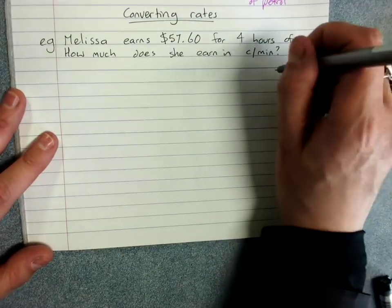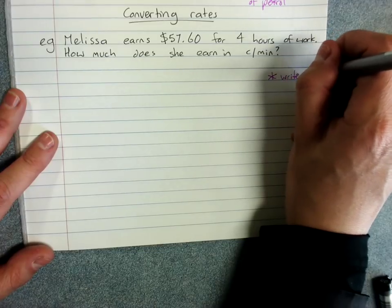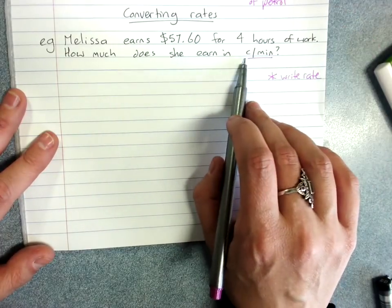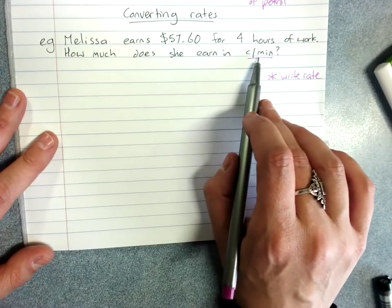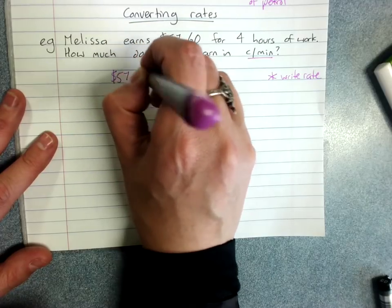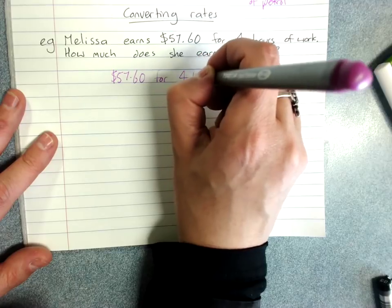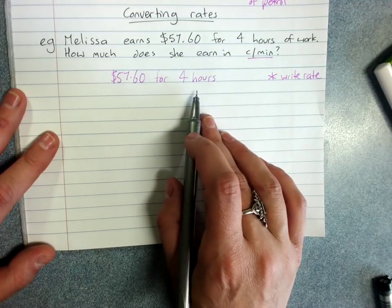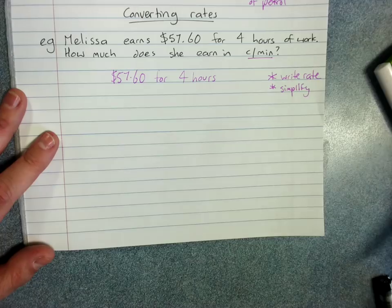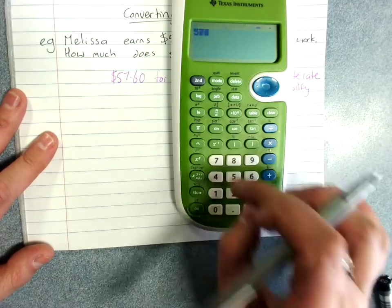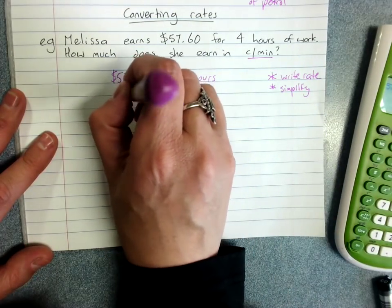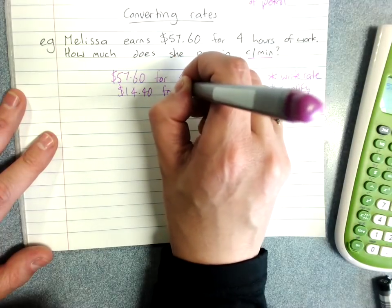So when we're converting, we do start by writing the rate. So if they give us a unit that they want, that really helps us. That's cents, so the money has to come first. And that's a minute, so the time has to come second. $57.60 for four hours. And of course when we've written our rate, we simplify our rate. Dividing both sides by four. 14.4. Now be very careful because this is money, so that's $14.40 for one hour.